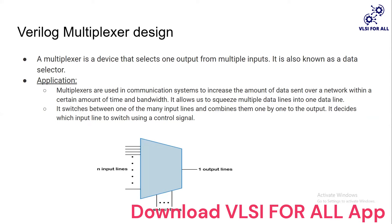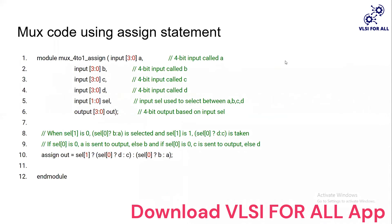The multiplexer decides which input line to switch using the control signal. The control signals are the select lines. For example, with four input lines — that is 2 to the power of 2 — there will be two select lines. When the input select is 0-0, the first input is connected to the output. When the input is 0-1, the second input is connected to the output. It works like a data selector.